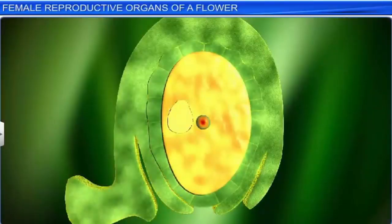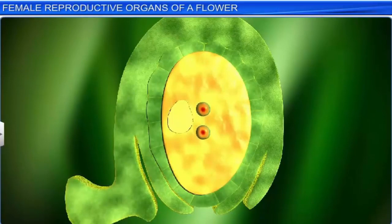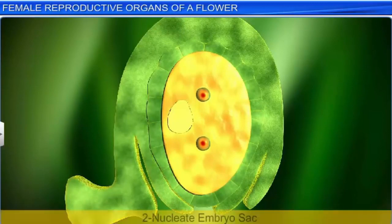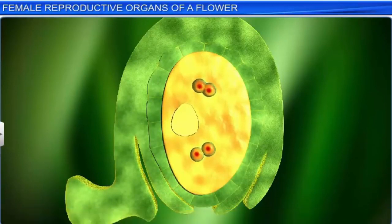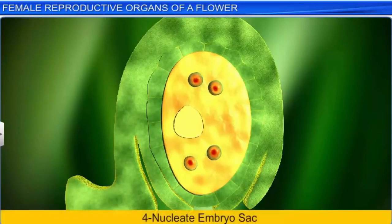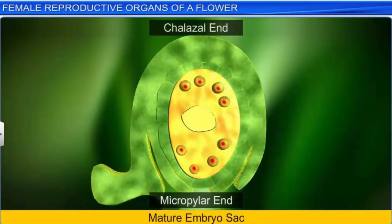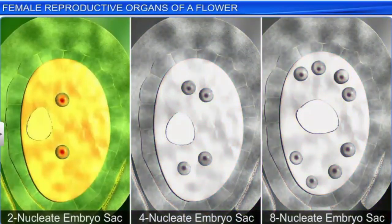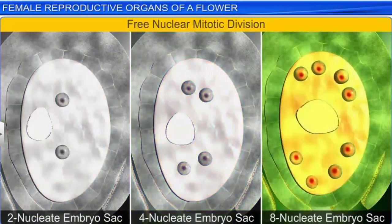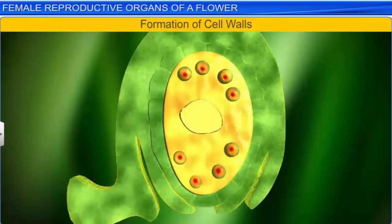While undergoing these mitotic divisions, the nucleus of the functional megaspore first divides to form two nuclei, which move to the two opposite ends of the embryo sac — this is the two-nucleate stage. The mitotic divisions continue and result in the formation of the four-nucleate and later the eight-nucleate stages of the embryo sac. A mature embryo sac thus has eight nuclei after three mitotic divisions, which are arranged in a group of four at each end. Interestingly, the mitotic divisions are free nuclear — meaning the division of the nuclei doesn't immediately trigger cytoplasmic division and cell wall formation. Instead, cell walls form only after the eight-nucleate stage.